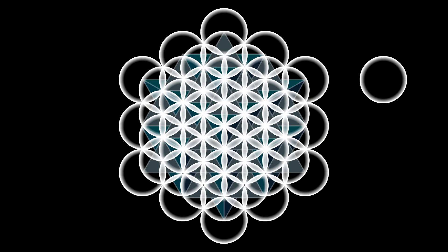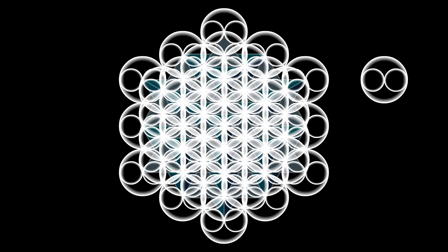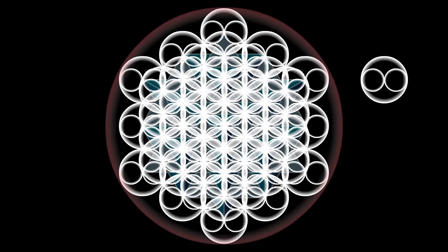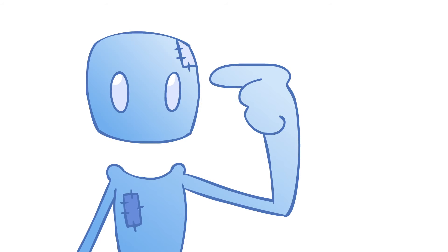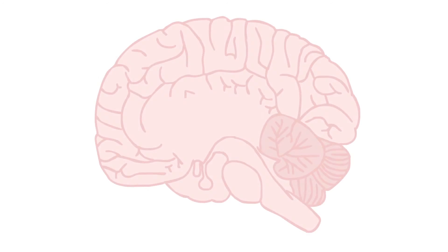If this structure is the male component, then the female component would be the toroidal flow between and around all of the points. Imagine that every sphere in and of itself is a torus, each with a singularity of its own. But the larger fractal is a larger sphere, also with a singularity of which all of the other toroids are connected to.